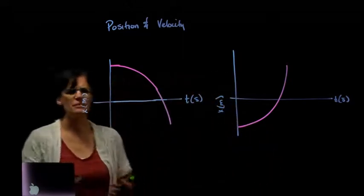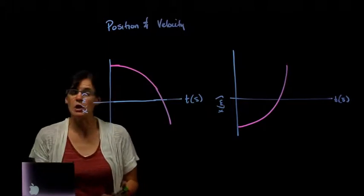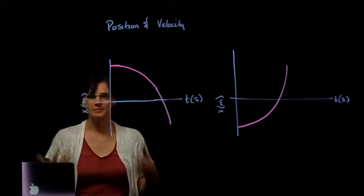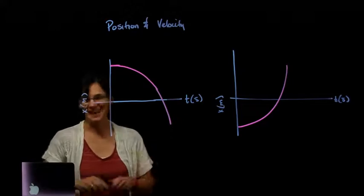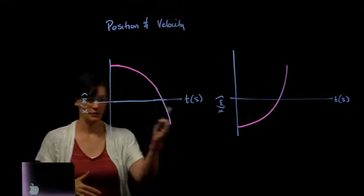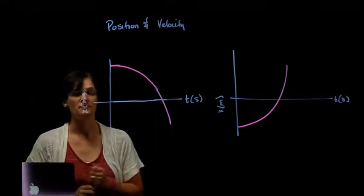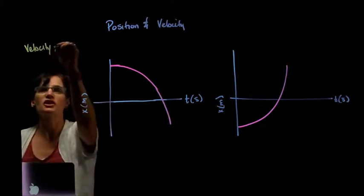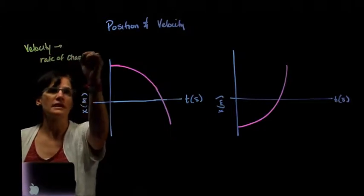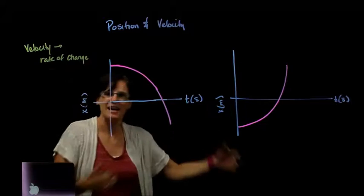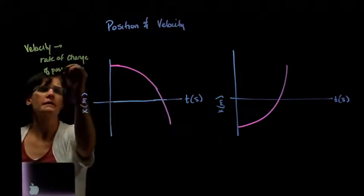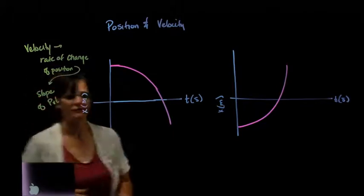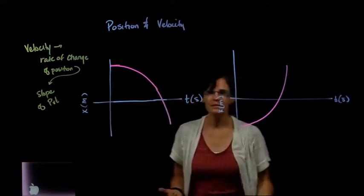What happens if the position versus time graph is not constant motion? What if the object is speeding up or slowing down and is no longer linear, as in the two examples here? How do I obtain velocity from a curve? How do I get the velocity — or the velocity graph — at every point in time when my position graph is not a straight line? What we want to remember is that velocity is still the rate of change of position.